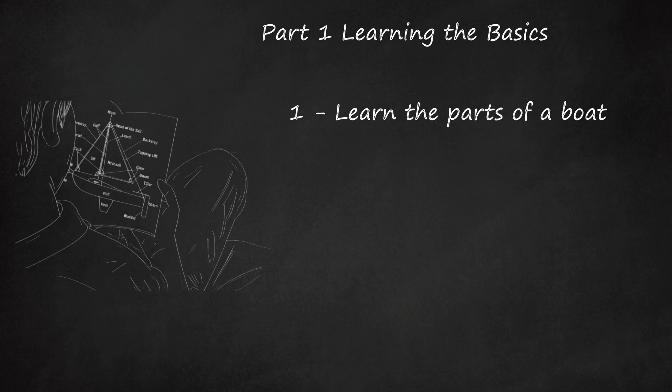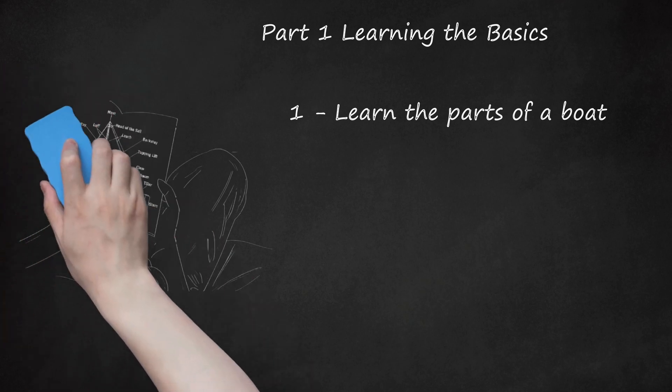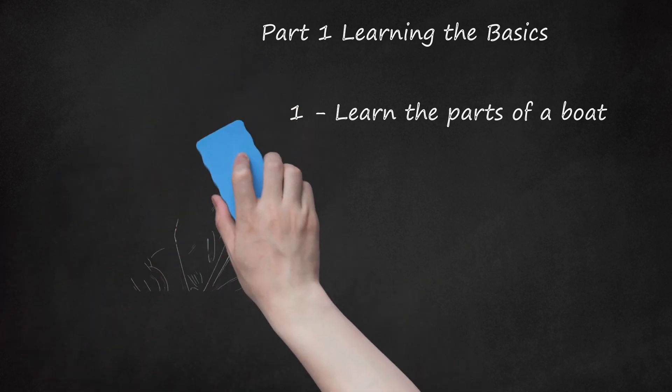Aft refers to the back of the ship. Bow refers to the front of the ship. Port is the left-hand side of the boat when you are facing the bow, front. Starboard is the right-hand side of the boat when you are facing the bow.